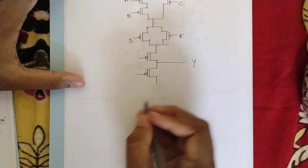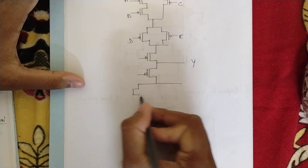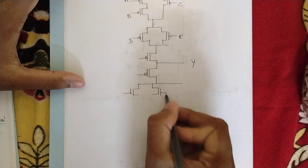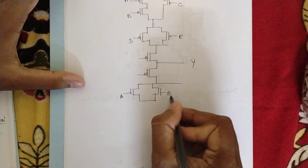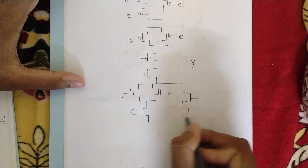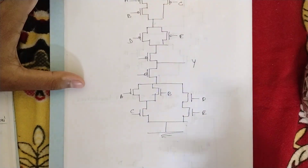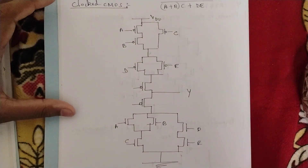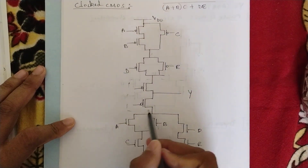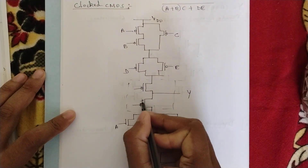From here you should be taking the output. Now in the pull-down part you should be drawing the NMOS transistors: a and b in parallel, into c that is in series, plus d and e in series. This is the C²MOS logic circuit for the expression (a+b)·c + d·e. We have included one clock signal — one PMOS and one NMOS.